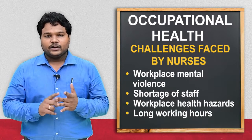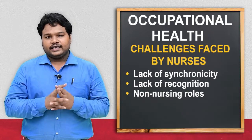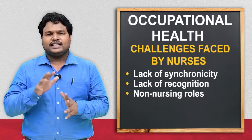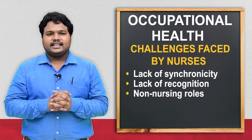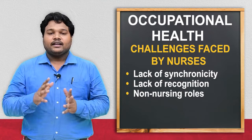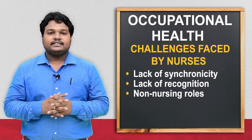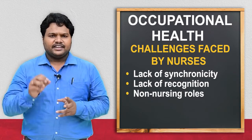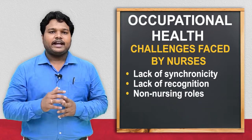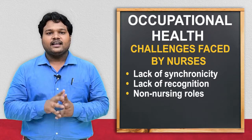The third issue is workplace asynchronicity — there is no proper harmonious relationship between health team members, which is an important problem for the staff nurse. The next issue is no proper recognition. Whatever happens, if something good happens it is credited to the doctor; if something bad happens it is blamed on the nurse. There is no proper recognition for nurses in the hospital.